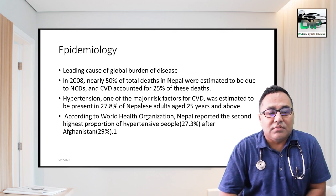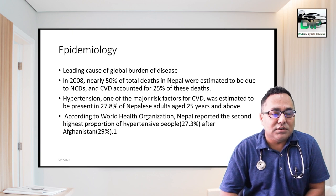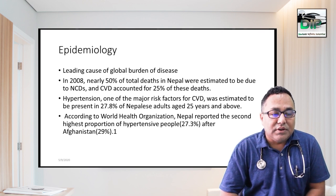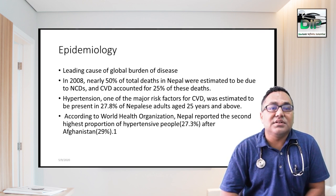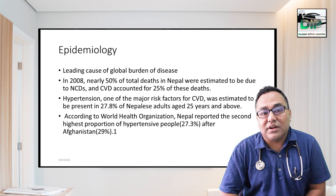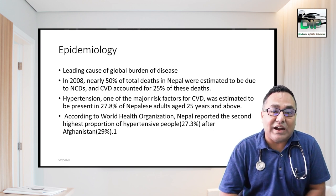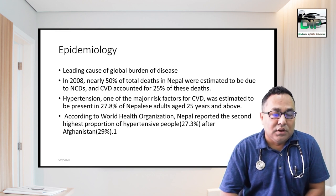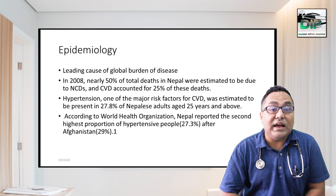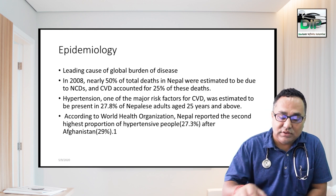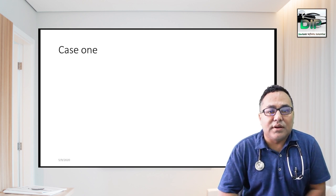Hypertension is one of the important global burdens of disease. In Nepal around 2008, we found that 50% of total deaths were due to non-communicable diseases, and among them cardiovascular disease accounted for 25% of deaths. Hypertension is one of the major risk factors for cardiovascular disease and was found to affect 27.8% of adults above 25 years of age in Nepal. According to WHO, Nepal reported the second highest proportion of hypertension at 27.3%, after Afghanistan at 29%.